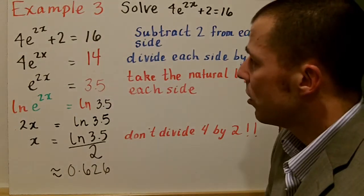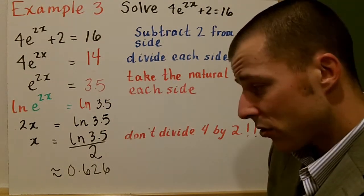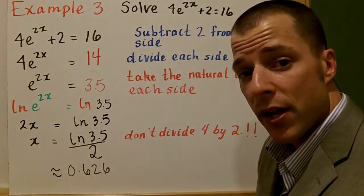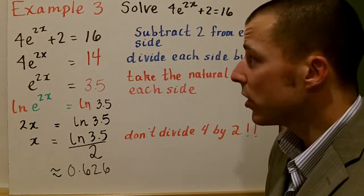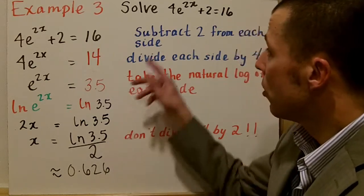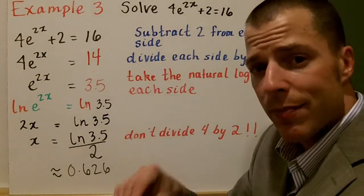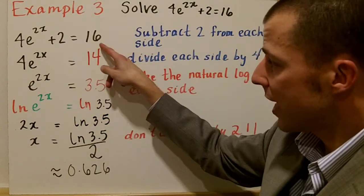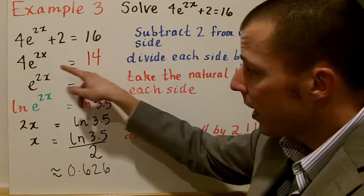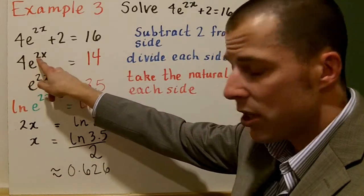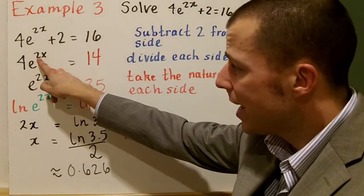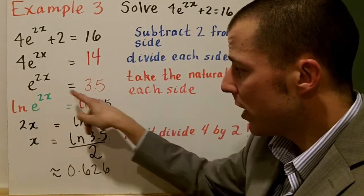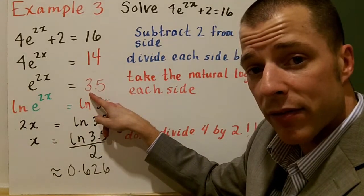So larger example here. We're not having a natural log in this example. We're having e raised to the 2x. Like other equations with radicals, what you really have to do is get that e by itself first. So here, we're going to subtract 2 from both sides, and we're going to be left with 14 on the right and 4 times e to the 2x on the left. Now, divide each side by 4. We eliminate the 4 here, and we have 3.5 left on the right.